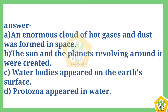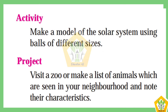Question number 5. Students, for homework, an activity question is given here. Make a model of a solar system using balls of different sizes, and on the basis of this chapter, you have to complete this project. Visit a zoo or make a list of animals which are seen in your neighborhood and note their characteristics.